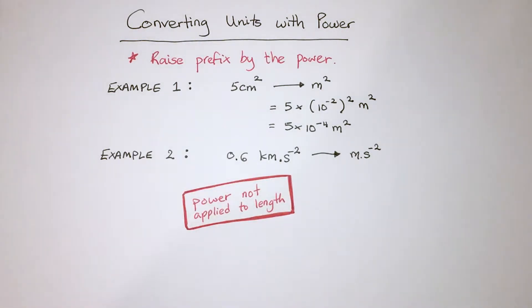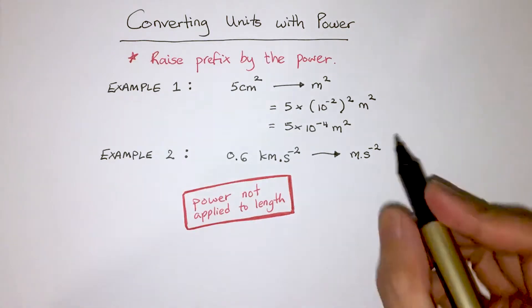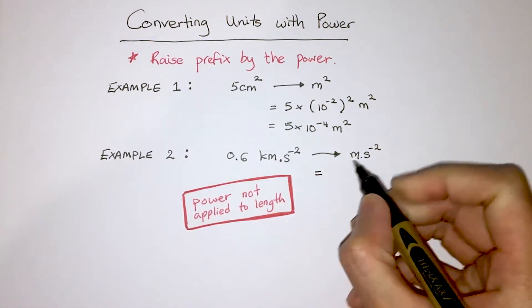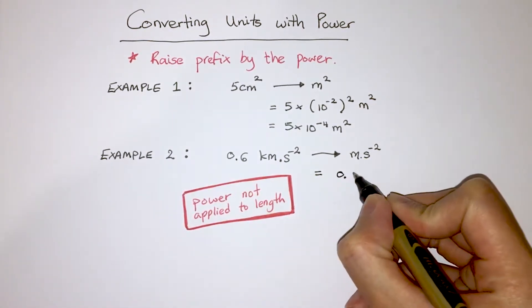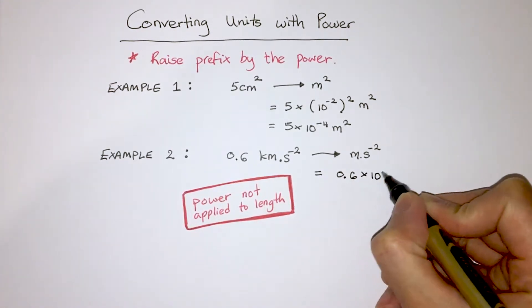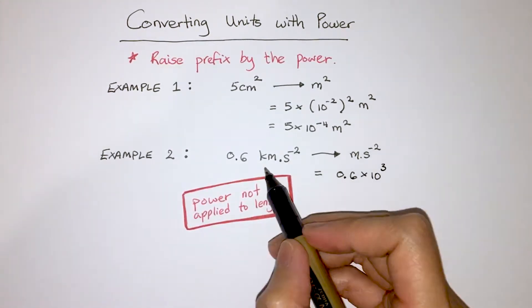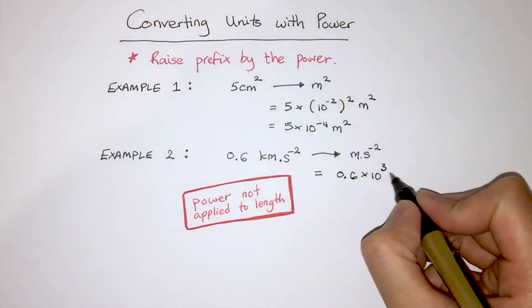So when we convert kilometers into meters, we don't have to take into account that there is a power. So it's simply a straight conversion of 0.6 times 10 to the power of 3, and 10 to the power of 3 comes from the kilo in kilometer.